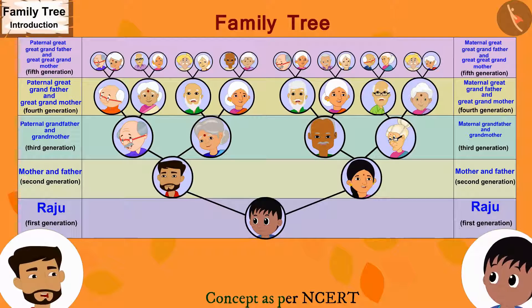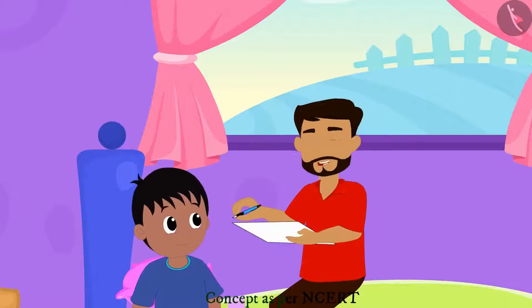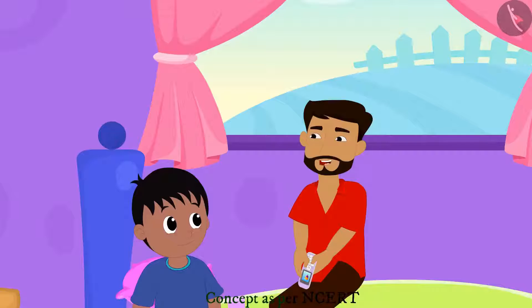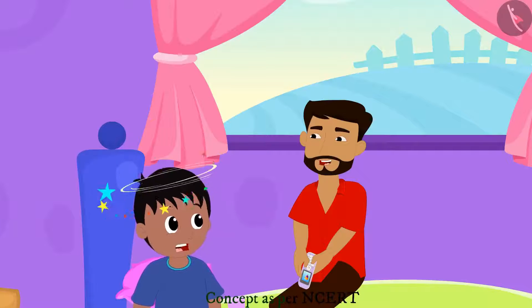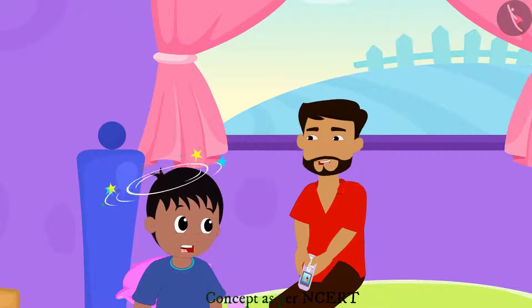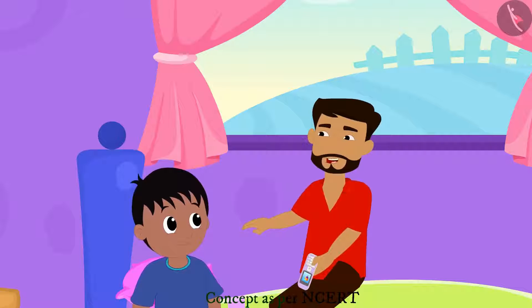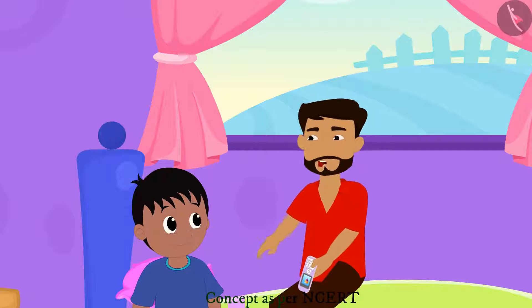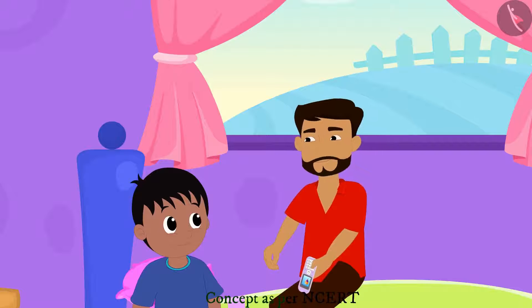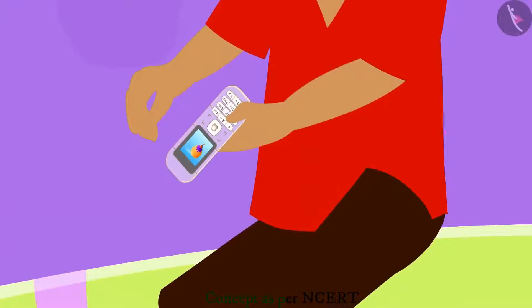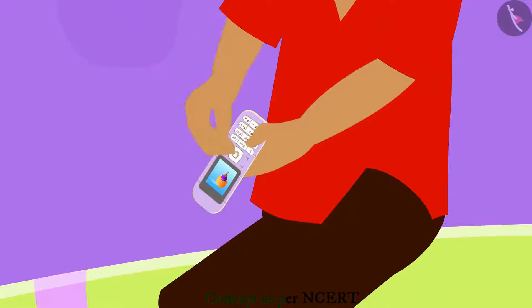With this, the family tree is now complete. The father jokes that Raju should help call all of them up quickly, causing Raju's head to spin. The father laughs and says he was just kidding, telling Raju to go play while he makes the calls himself. Raju quickly runs off to play and the father begins calling all the relatives.